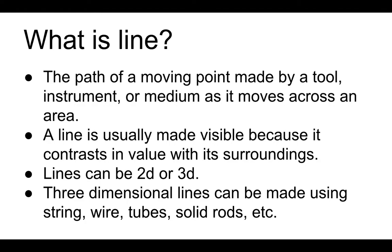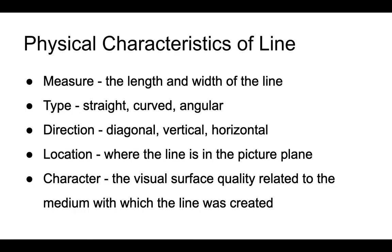Lines can be two-dimensional, such as a graphite line on a piece of paper, or three-dimensional, like string, wire, tubes, solid rods, etc. When we think about line, there are some physical characteristics that we use to describe lines.